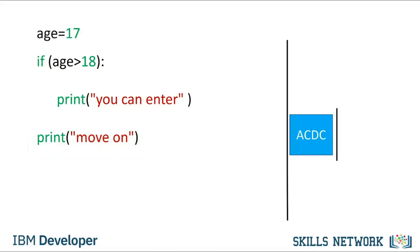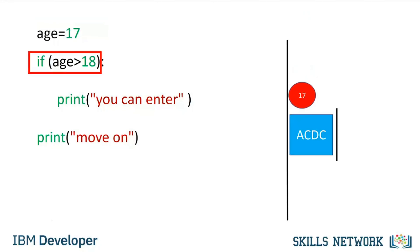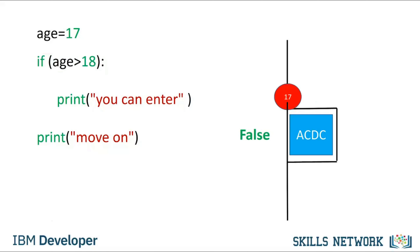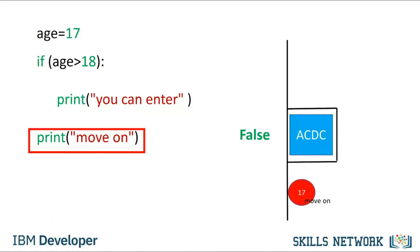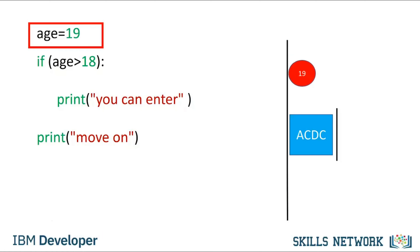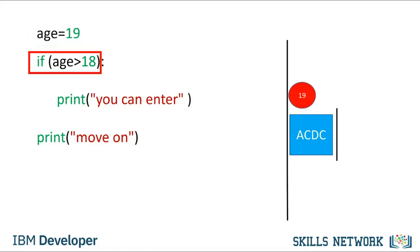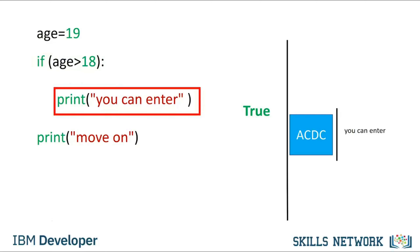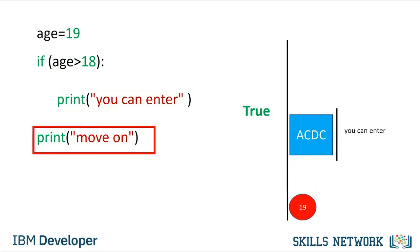For the case where the age is 17, we set the value of the variable age to 17. We check the if statement — the statement is false, therefore the program will not execute the print statement 'you will enter'. In this case, it will just print 'move on'. For the case where the age is 19, we set the value of age to 19. The statement is true, so the program will execute the print statement 'you will enter', then print 'move on'.